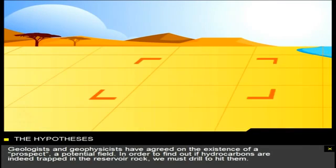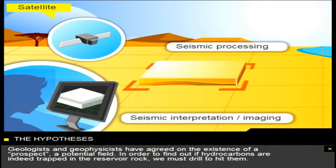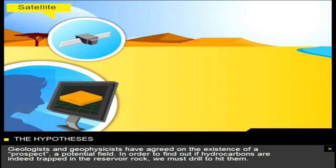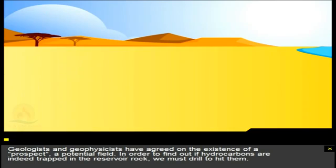Geologists and geophysicists have agreed on the existence of a prospect, a potential field. In order to find out if hydrocarbons are indeed trapped in the reservoir rock, we must drill to hit them.